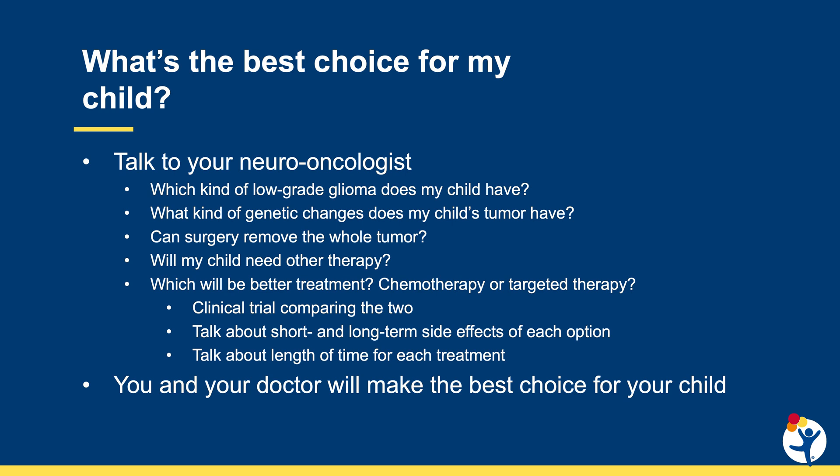So what are you going to do to choose which therapy is best for your child? Here are a few questions you might want to ask your neuro-oncologist: What kind of low-grade glioma does my child have? What genetic changes does my child's tumor have? Can surgery remove the whole tumor, and if so, do I need any other treatment after that? Will my child need any other therapy? And which is going to be the best treatment — chemotherapy or targeted therapy? Make sure to have a good discussion with your doctor, as there are clinical trials comparing the two to figure out which is best. We're still working that out with science and clinical research. You should also talk about the short and long-term effects of each option, as there may be choices specific to your child that will guide the decision.